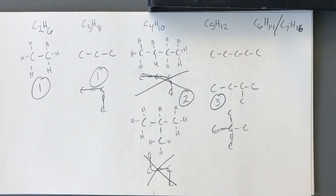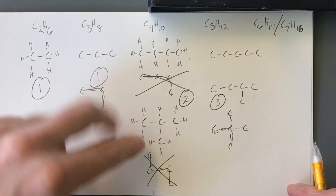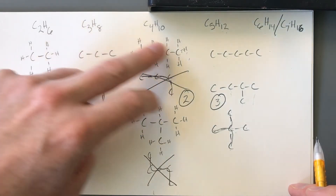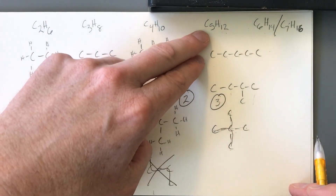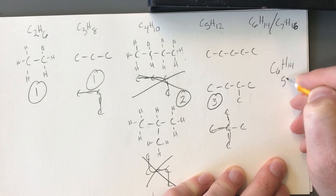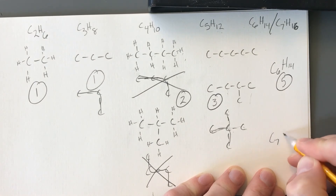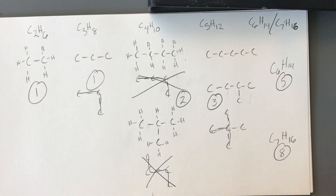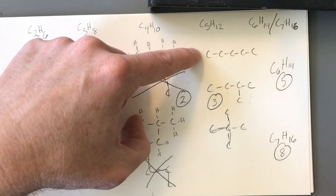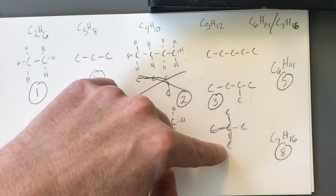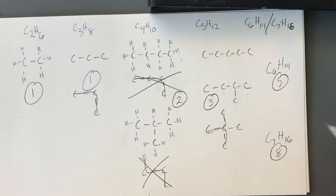For your lab activity, you need to draw the two isomers of butane (C4), the three isomers of pentane (C5), five isomers of hexane (C6H14), and eight isomers of heptane (C7H16). There are hints on the activity sheet: for C5 we had one with a chain of five, one with a chain of four and a branch, and one with a chain of three and two branches. Look for those patterns as you work through C6 and C7, and compare structures to make sure you haven't drawn the same molecule twice.